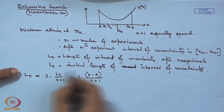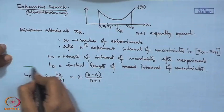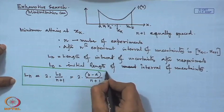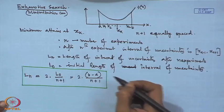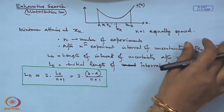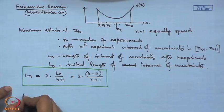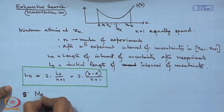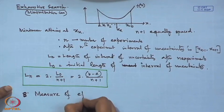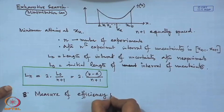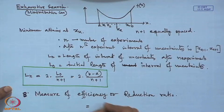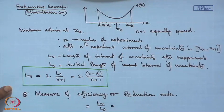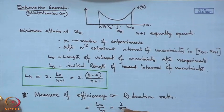This result is needed for finding the value of n when the number of equally spaced points is not specified. We use this formula depending on how much accuracy we want regarding the optimal solution. The measure of efficiency, or reduction ratio, for this searching technique is Lₙ/L₀, which equals 2/(n + 1).